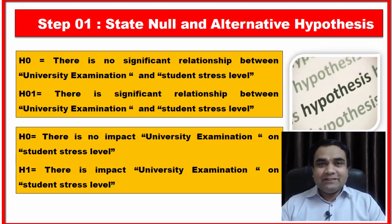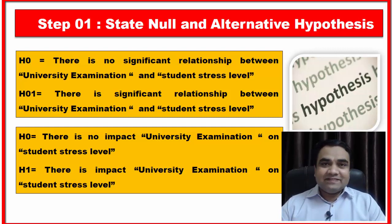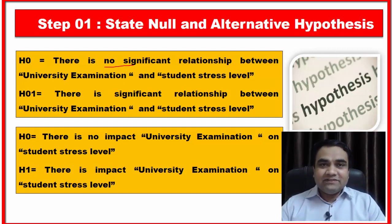Now let us look at the first step: state the null hypothesis and the alternative hypothesis. The null hypothesis shows no relationship between the variables, whereas the alternative hypothesis shows a relationship between the variables. For example, suppose a researcher wants to understand whether there is any impact of university examinations on the stress level of college-going students. The null hypothesis is: there is no significant relationship between university examinations and the stress level of college-going students. The alternative hypothesis is: there is a significant relationship between university examinations and the stress level of college-going students.